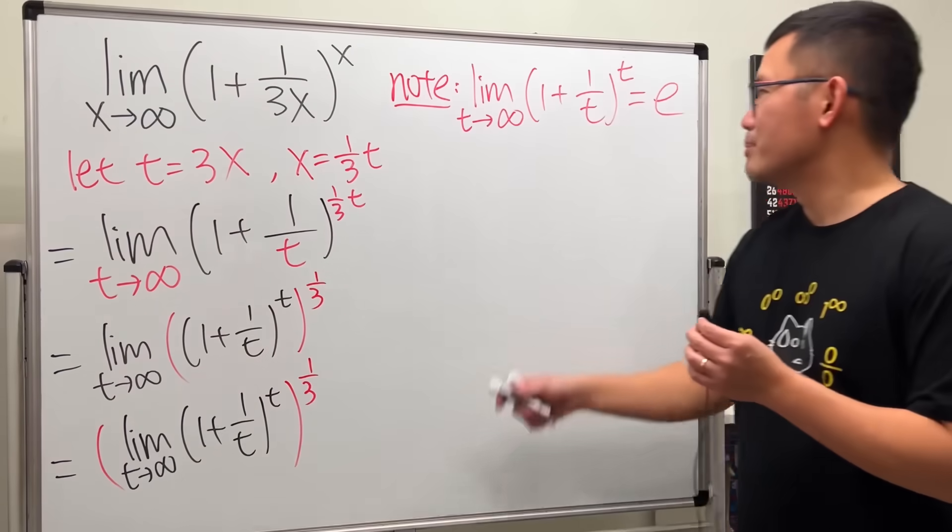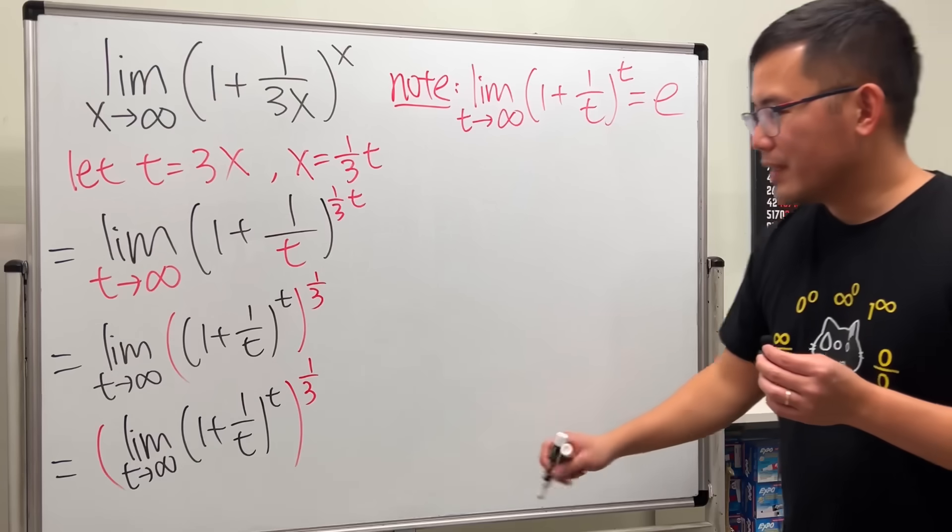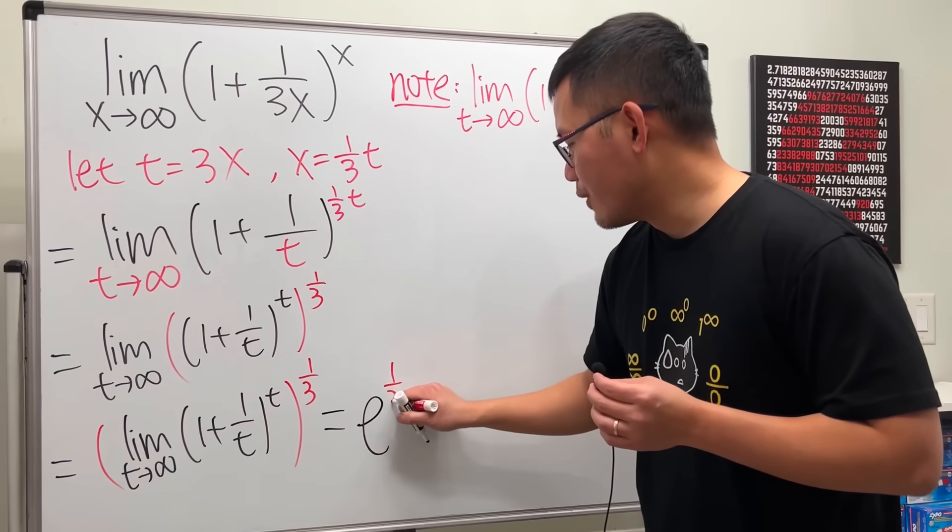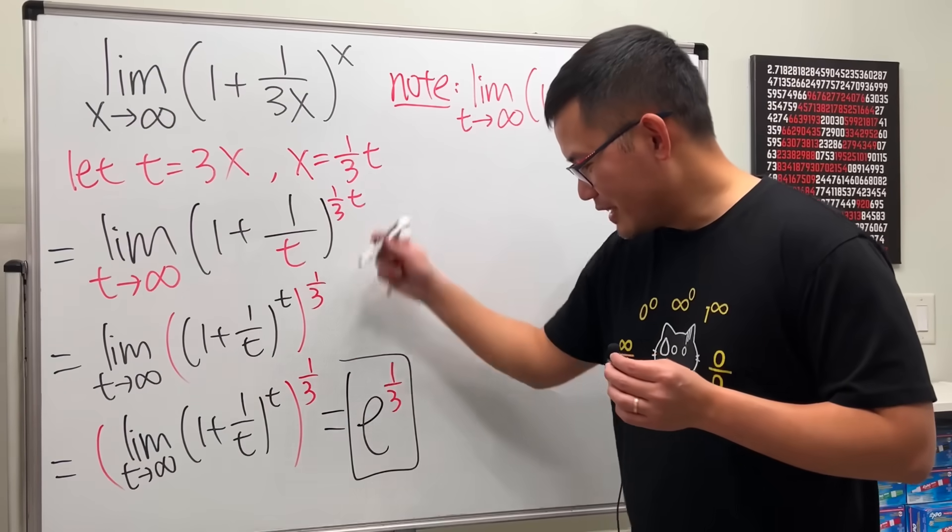What's this? Well, by definition, it's e. So, ladies and gentlemen, we'll just end up e to the 1 over 3 power. Just like that.